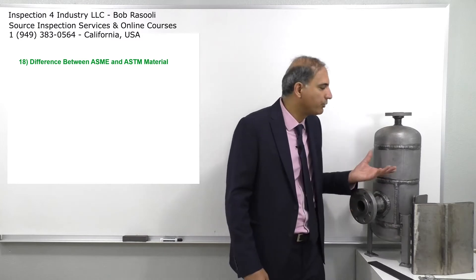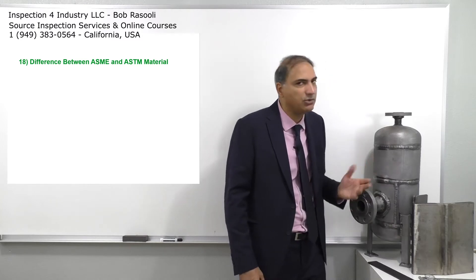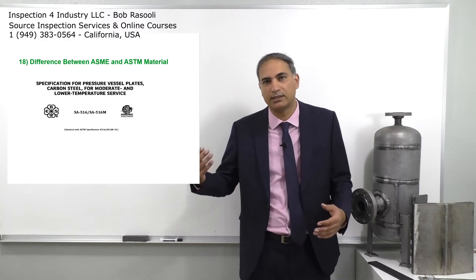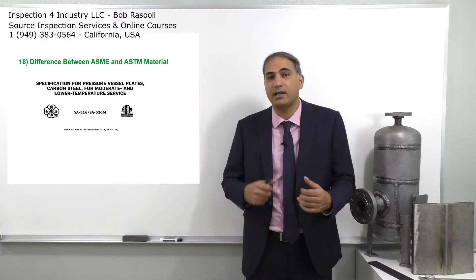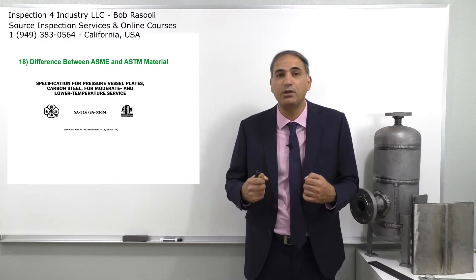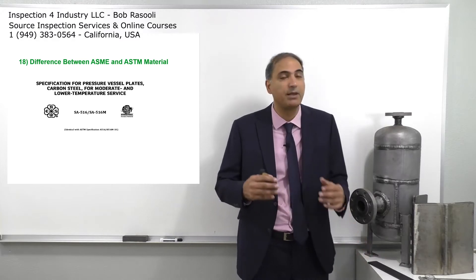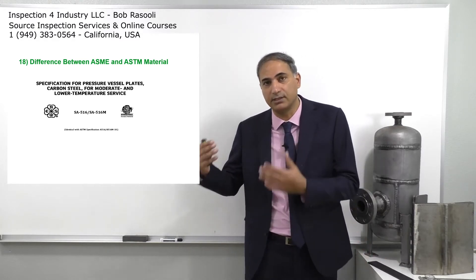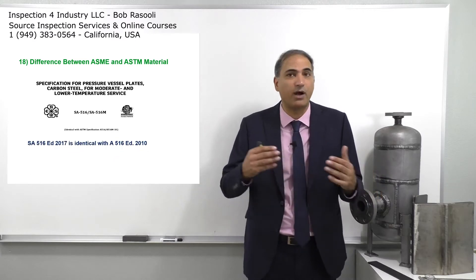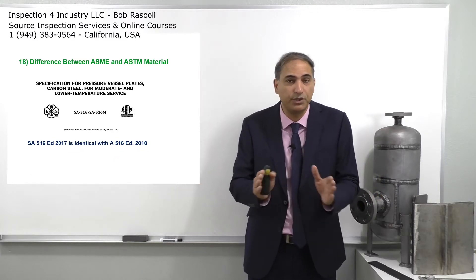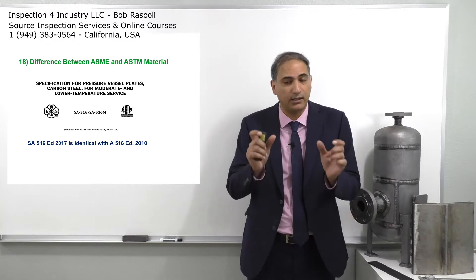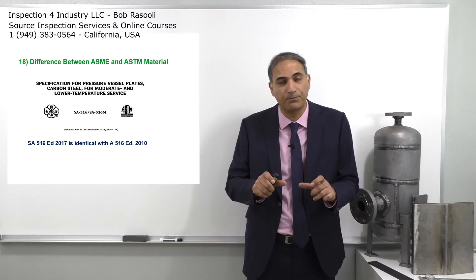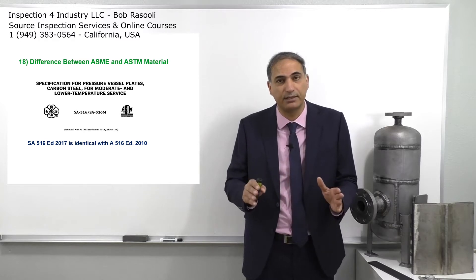If you go to a manufacturing shop for pressure vessels, you will always see SA-516 grade 70, as I explained in my previous slides. But there is also a material named A-516 grade 70. These are two different materials — very similar and might be identical, but they are separate.